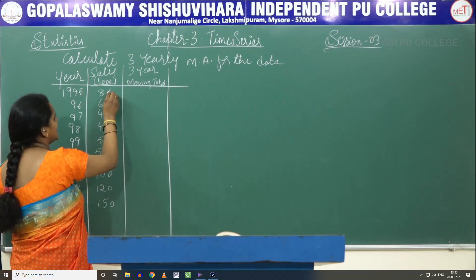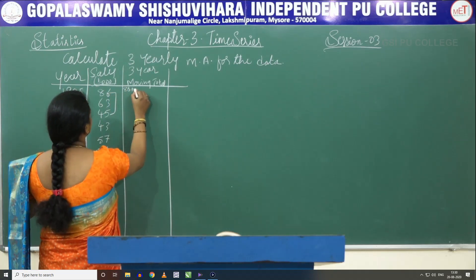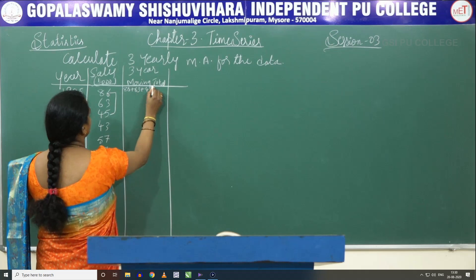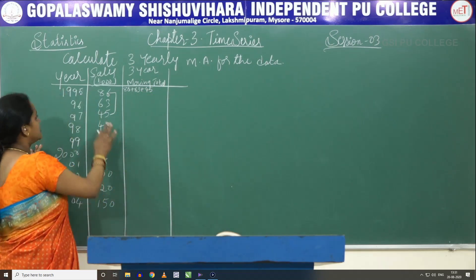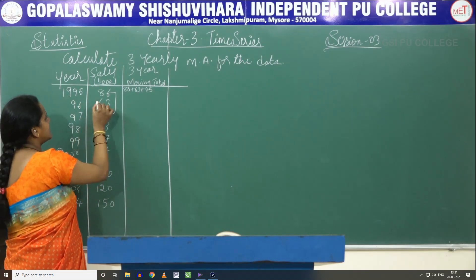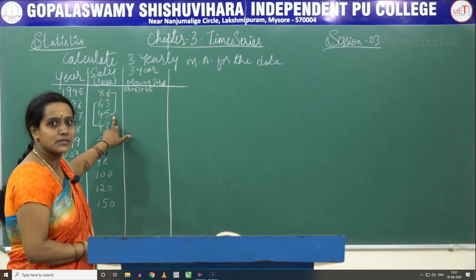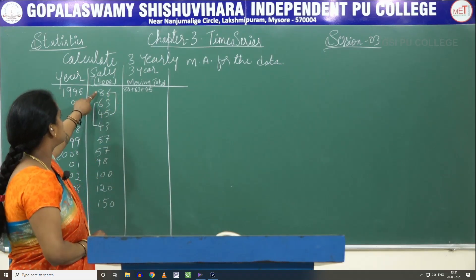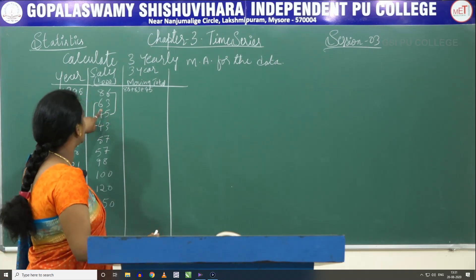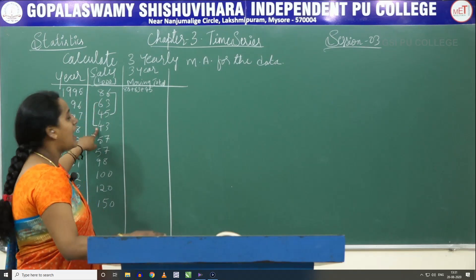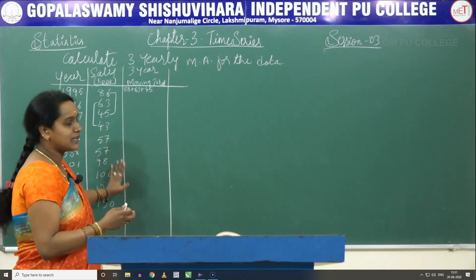For 1995, 1996, 1997 — that is 86, 63, 45 — we add 86 plus 63 plus 45. Next we add 1996, 1997, and 1998. I will show this using a bracket. First we add the first 3 values: 1, 2, 3; next 3: 2, 3, 4; next: 3, 4, 5; then 4, 5, 6 — like that it will continue.